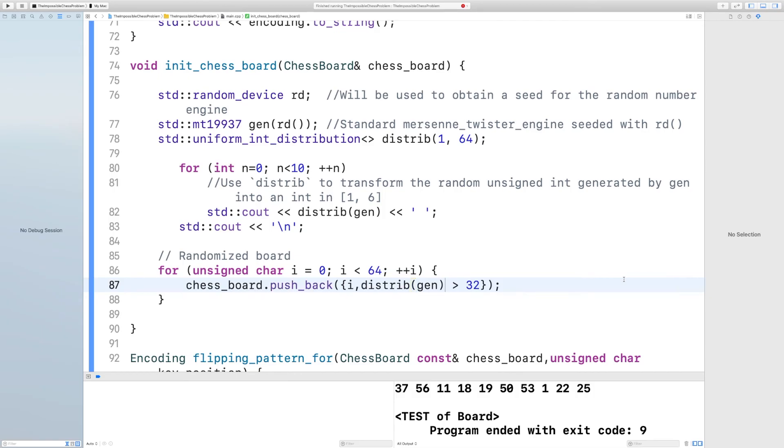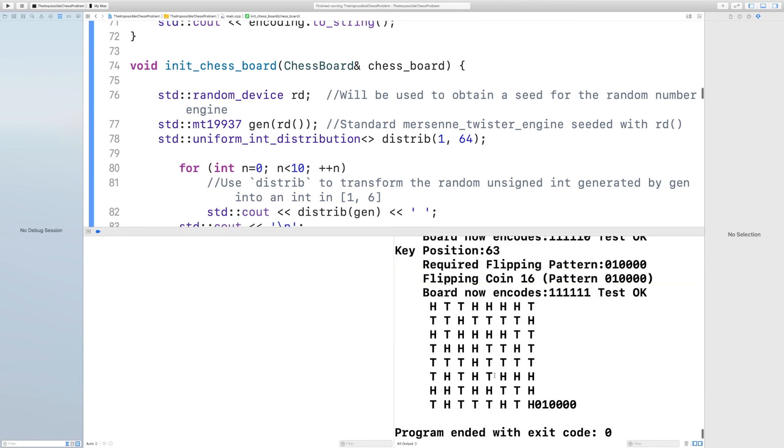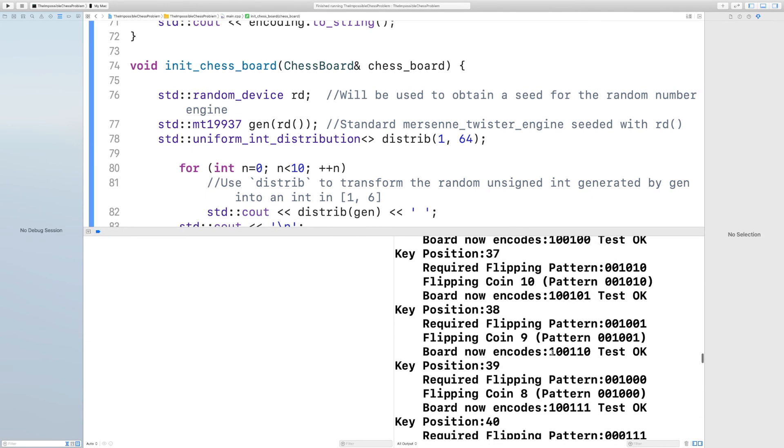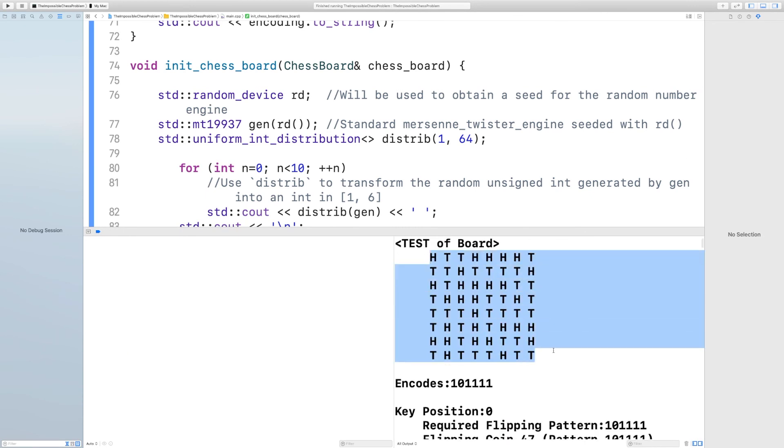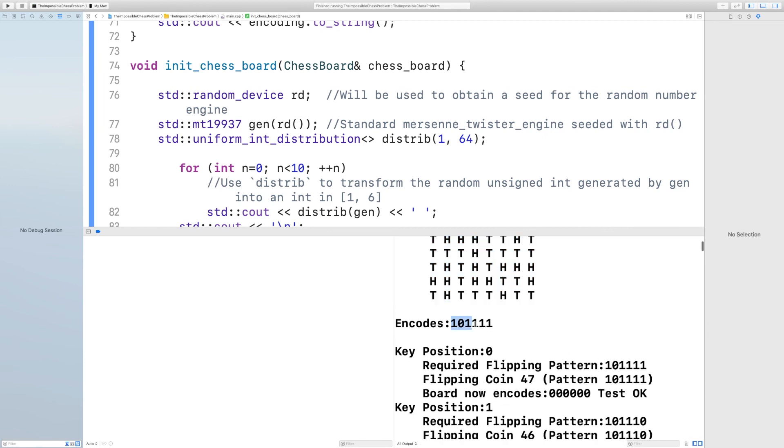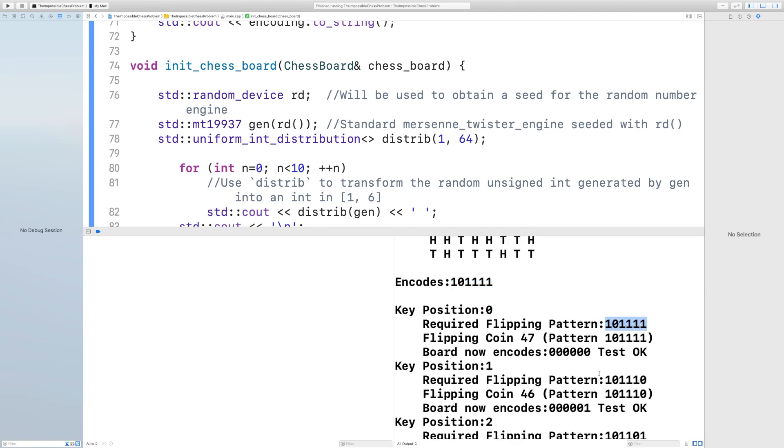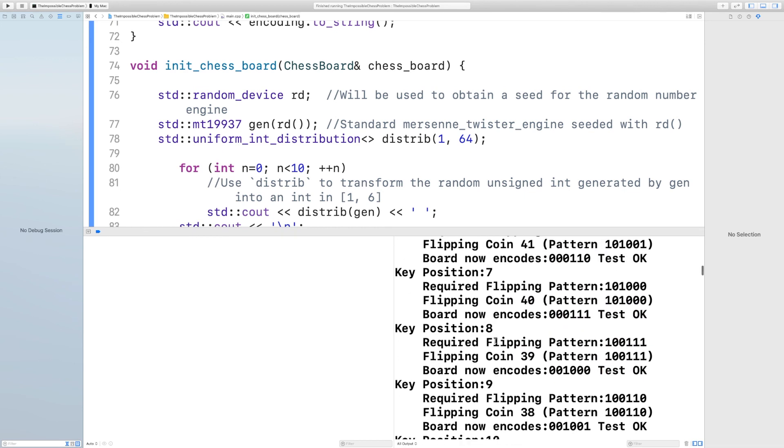If we check this board using our definition of encoding and decoding we get decimal 11 and prisoner number two will know where the key is. Fantastic! To check the solution I wrote a C++ program that randomized the board and then looped through each key position and checked that it was possible to flip one coin and encode this key position.